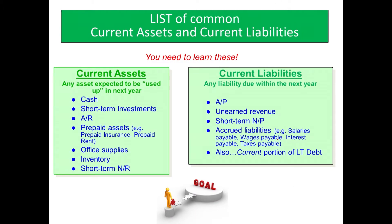I have a list of what your current assets and current liabilities are, and you should have this on your printout. If you are taking business classes, you are going to need to know these — you'll need to do this a lot, so you might as well learn them now. Your current assets — those expected to be used up in the next year — are cash, short-term investments, accounts receivable, prepaid assets such as prepaid rent, prepaid insurance, office supplies, inventory, and short-term notes receivable.